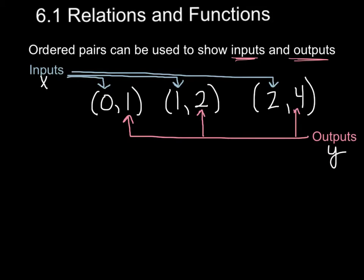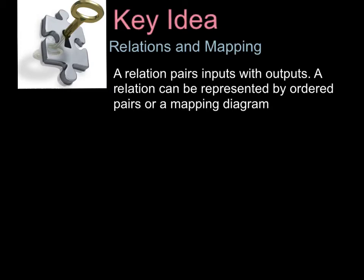So your key idea is over relations and mapping. A relation pairs inputs with outputs, your x with your y. A relation can be represented by ordered pairs or a mapping diagram. Let's write them as two separate things: ordered pairs and a mapping diagram.